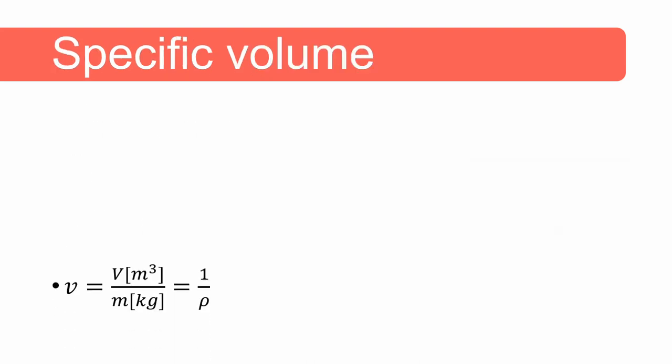So let's consider specific volume. Specific volume is the volume of a substance divided by its mass. That can also be said as the inverse of density. It's not easy to develop a concrete understanding of the concept of specific volume but in thermodynamics we use specific volume rather than density.